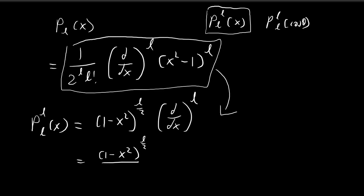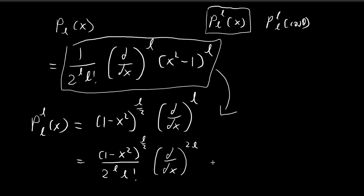We pull out 2^L and L factorial, and then we have d/dx applied L times, further applied to the other d/dx which is also applied L times, ultimately applied on (x²-1)^L. In total, we apply d/dx a total of 2L times on (x²-1)^L.